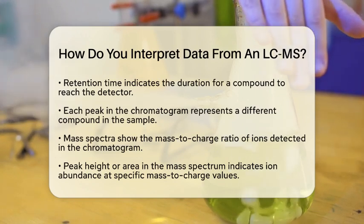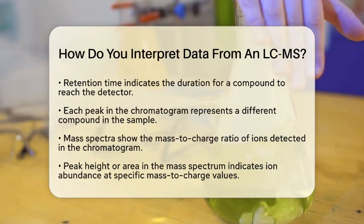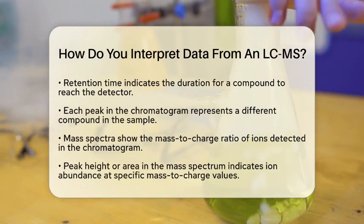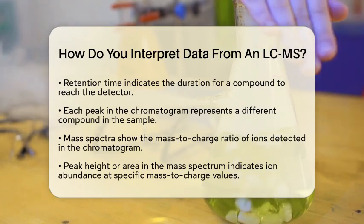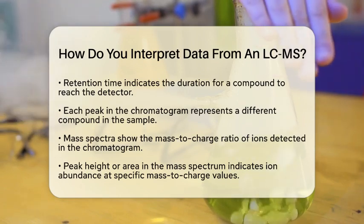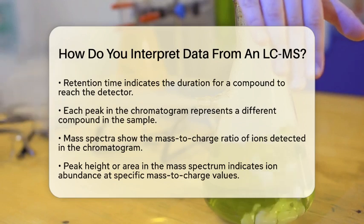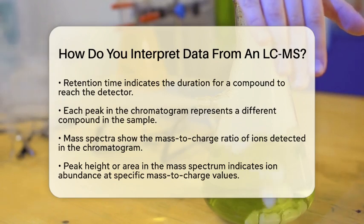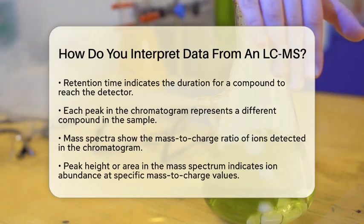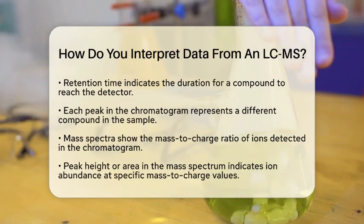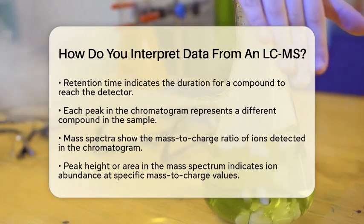Along with the chromatogram, you will also receive mass spectra. These spectra display the mass-to-charge ratio of ions detected at each point in the chromatogram. The height or area of peaks in the mass spectrum indicates the abundance of ions at specific mass-to-charge values.